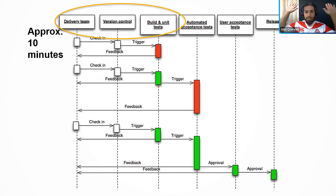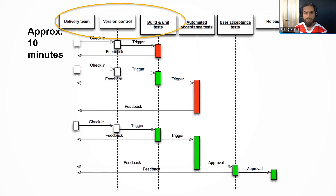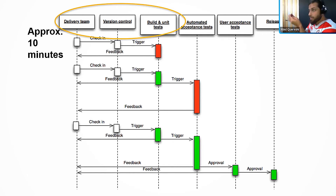We don't say 'shippable' anymore — we say 'releasable.' Once I was in Italy talking about shippable product increment, and the Italians said 'Abed, we don't put our software onto a ship.' Shippable is a terrible analogy because it implies effort to load the product. Releasing should be effortless — all the tests pass, you don't need huge planning meetings, you just release.